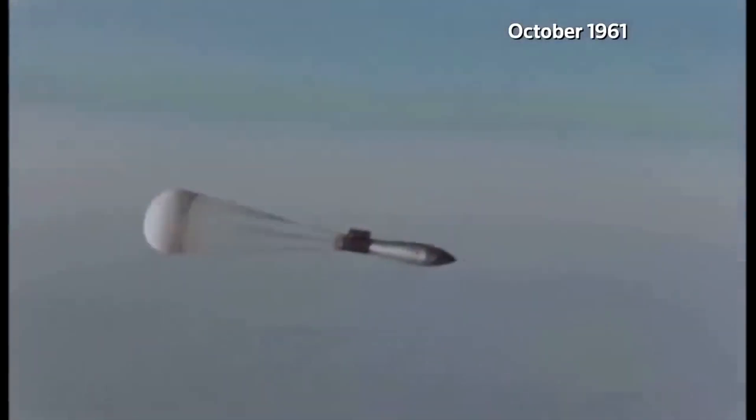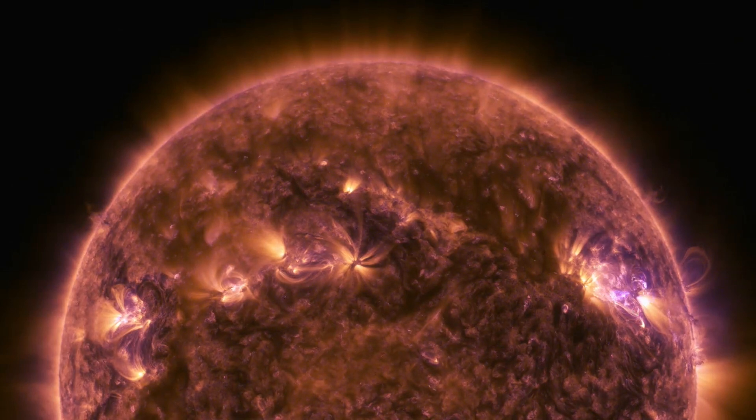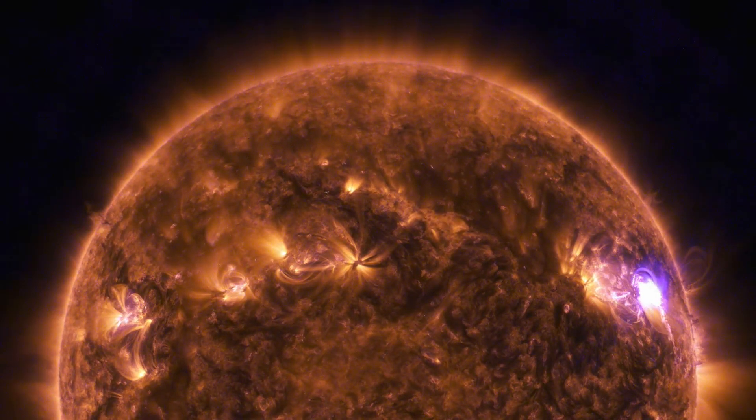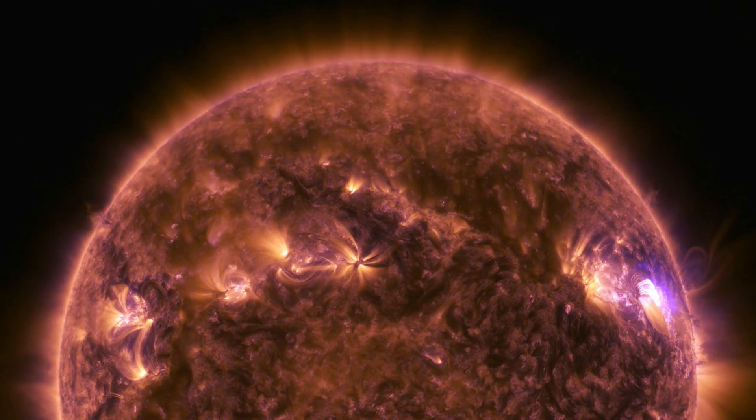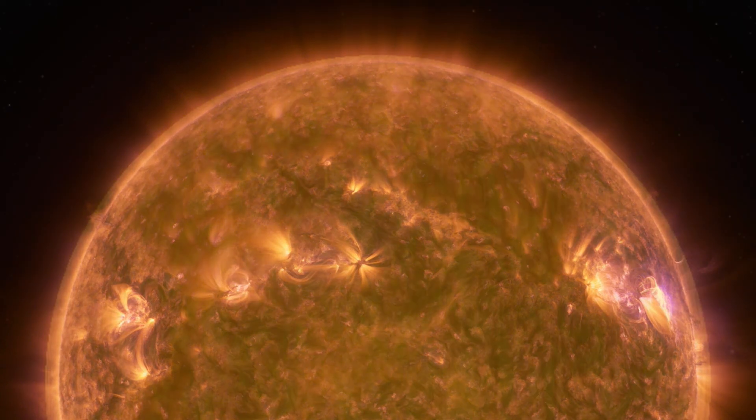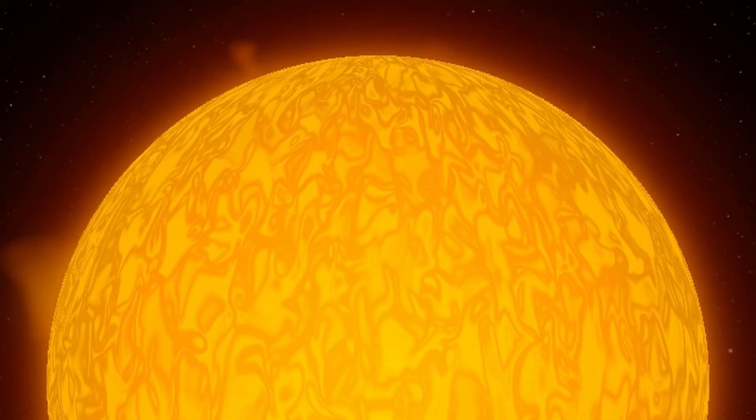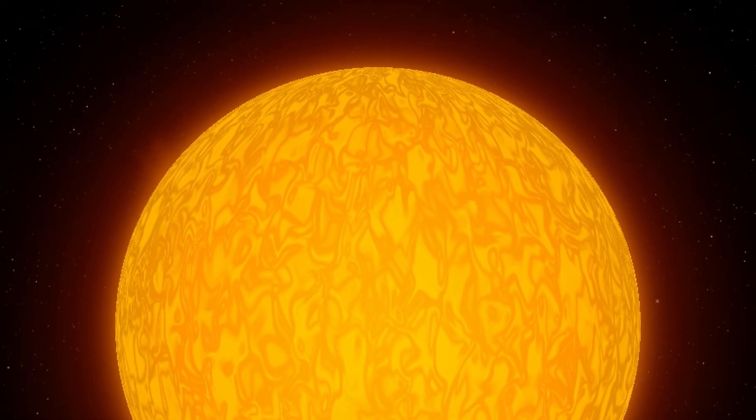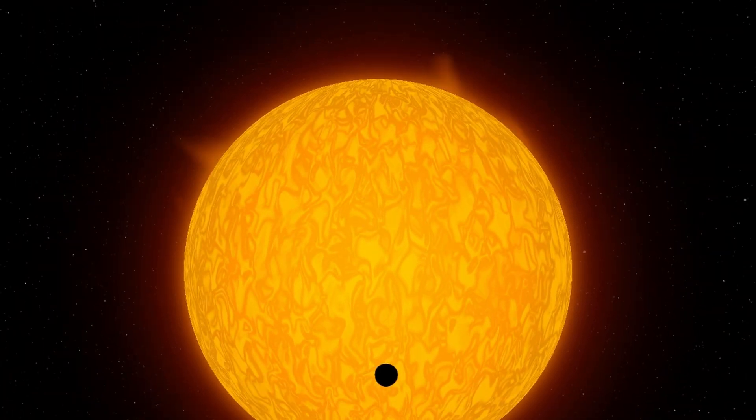So now it all makes sense. Nuclear fusion happens in a hydrogen bomb and in the sun, but the reason that the sun doesn't explode like a bomb is because, given its size, only a very, very, very small amount of fuel is actually available to explode at any given time.